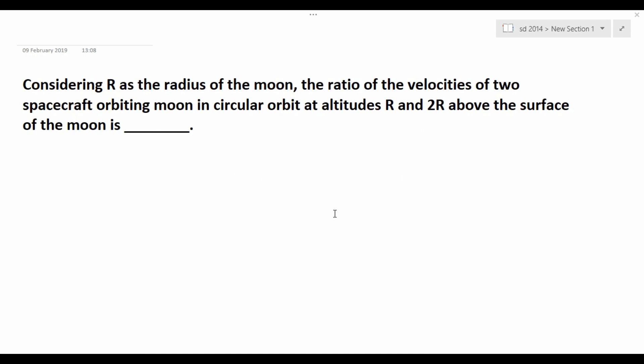First of all, what is the orbital velocity formula? It is equal to the square root of GM by r, and r is nothing but the moon radius plus some altitude. So here we have to find out the orbital velocity of two orbiting satellites.